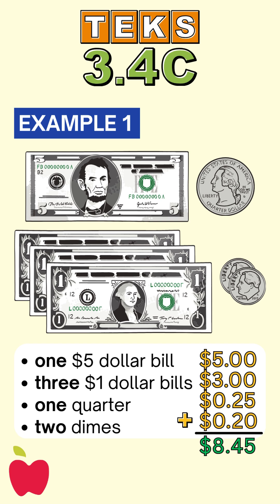When you add coins and bills, make sure to line up the decimal point to keep your dollars and cents in the right places. It helps you see clearly how much money you have. So you have $8.45 — now you know how much your friend gave you.